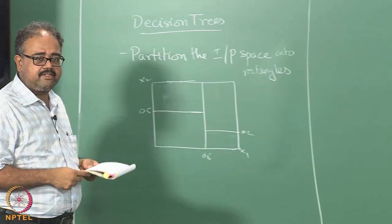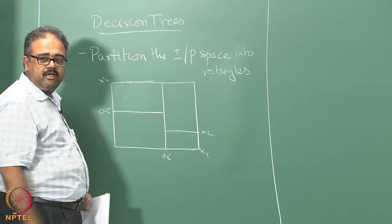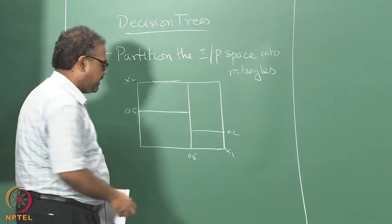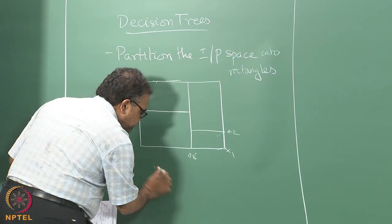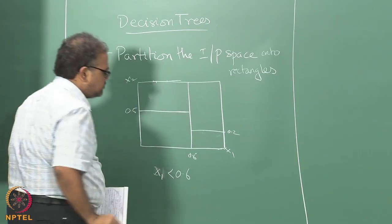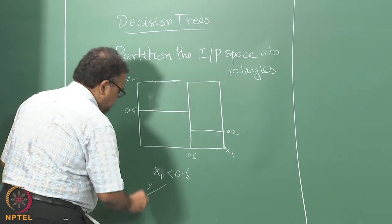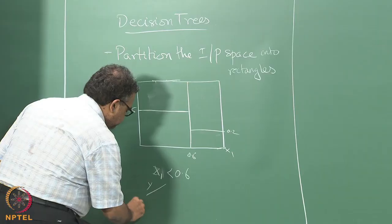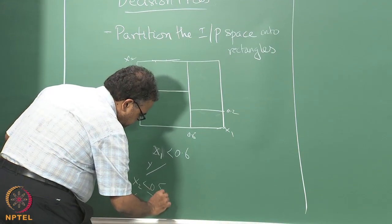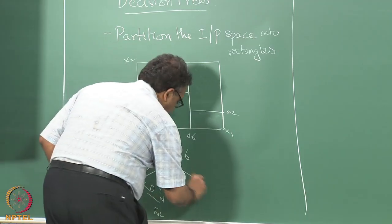The biggest advantage of decision trees is the interpretability. For example, this region segmentation that I have drawn I can represent it as a tree. I will first ask the question: is x1 less than 0.6? If you say yes, I go left. Then I ask: is x2 less than 0.5?